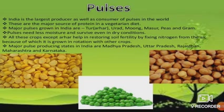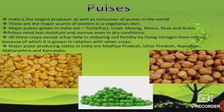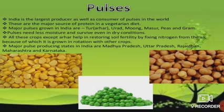India is the largest producer as well as consumer of pulses in the world. Pulses are major sources of protein in a vegetarian diet. Major pulses grown in India are tur, urad, moong, masoor, peas and gram. Pulses need low moisture and can survive in dry conditions. All crops except arhar help in restoring soil fertility by fixing nitrogen from the air, which is why they are grown in rotation with other crops. Major pulse producing states are Madhya Pradesh, Uttar Pradesh, Rajasthan, Maharashtra and Karnataka.